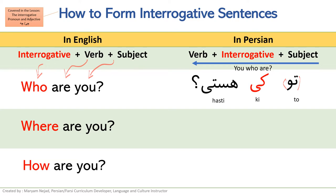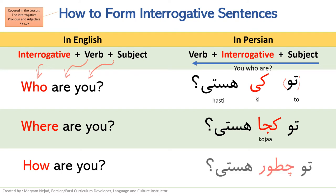For 'where are you', the structure is the same — only the interrogative changes to 'koja', so: 'koja hasti', or 'koja hasti' without the subject pronoun. For 'how are you', 'how' is 'chatur', so: 'to chatur hasti'.